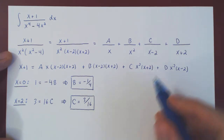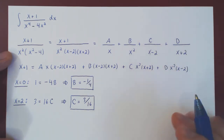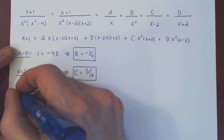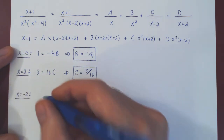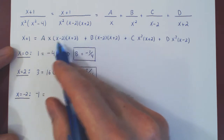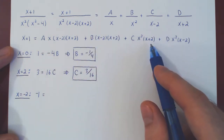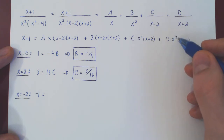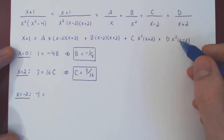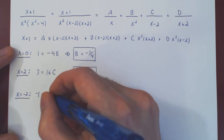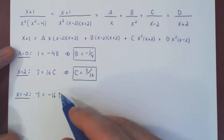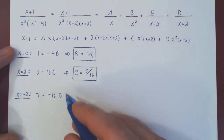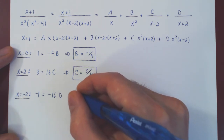For x equals negative 2: negative 2 plus 1 is negative 1. The A, B, and C terms vanish. We're left with D times negative 2 squared times negative 2 minus 2, which is 4 times negative 4 equals negative 16. So negative 1 equals negative 16D, and dividing by negative 16 gives D equals 1/16.